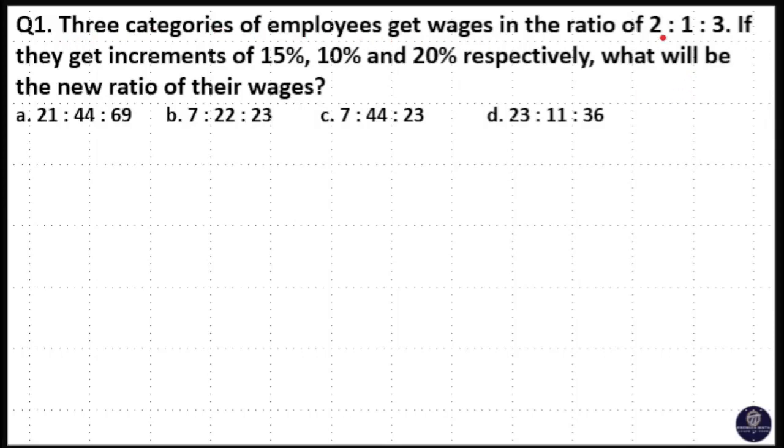Three categories of employees get wages in the ratio of 2 is to 1 is to 3. If they get increments of 15%, 10%, and 20% respectively, what will be the new ratio of their wages?